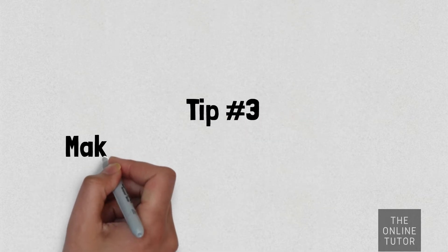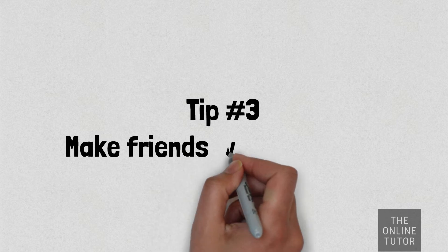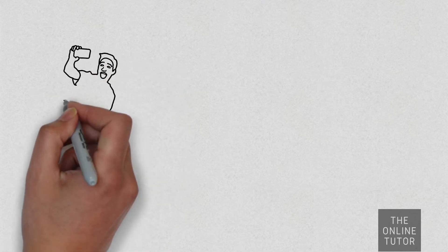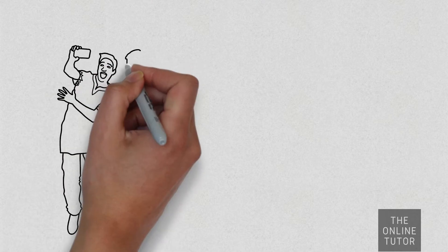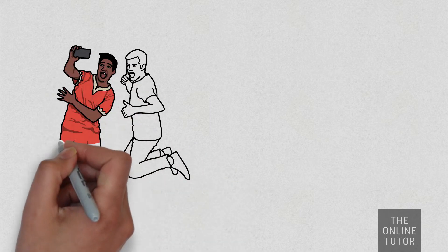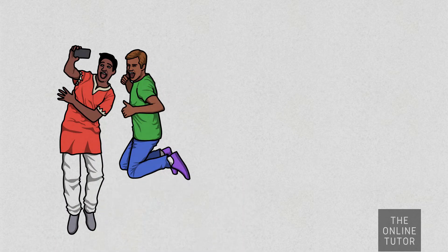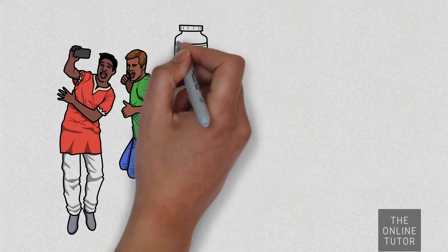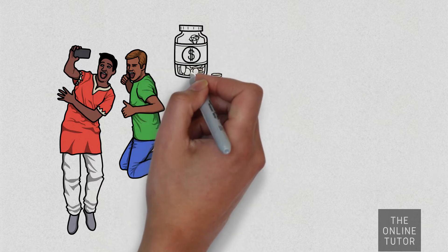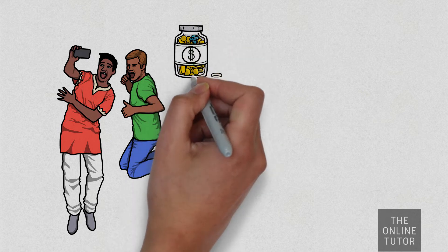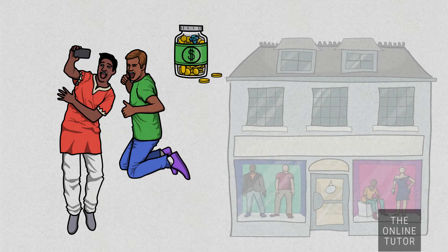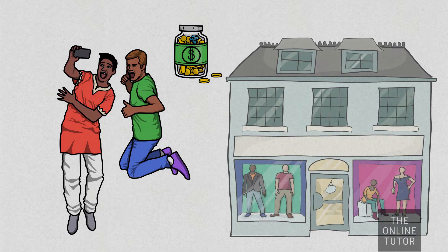Tip number three: make friends with the locals. Your time spent in a foreign country is much easier and productive when you have a friend who lives there. That person can act as the medium or translator on your behalf. They can assist you with learning the culture of the people, teach you how to get bargains, where to find great food or shopping areas, or even amazing sites to visit.